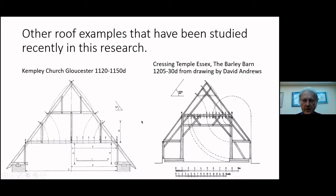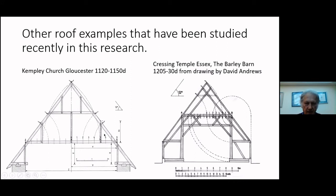Other roofs and examples I have been studying recently: Kempley Church, Gloucestershire, 1120 to 1150, dendro-dated. This works almost perfectly to the setting out using the divisions of the collar of the roof. Not only that, but positions A and B give the width of the wall, and then the divisions between those set out exactly the other collars and give the pitch of the roof, which is 52 degrees. Another example, the Cressing Temple barley barn, also works out exactly based on the tie beam method.